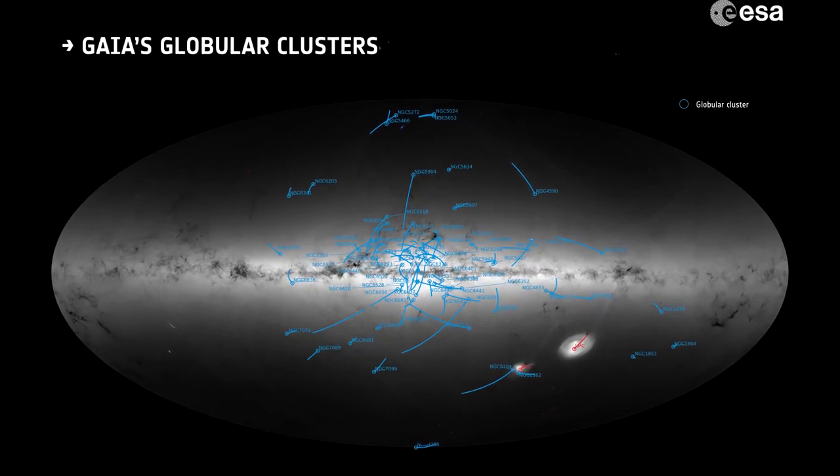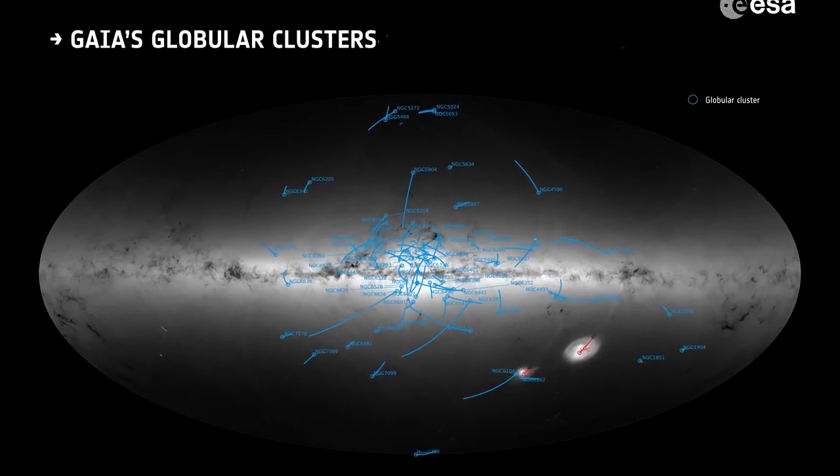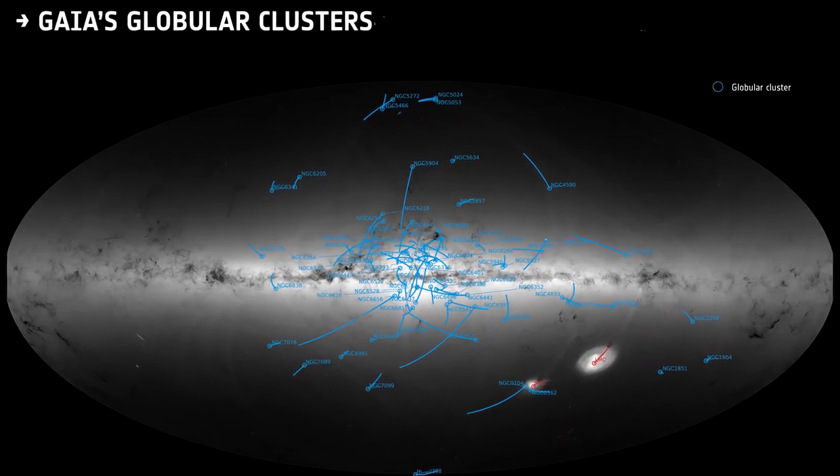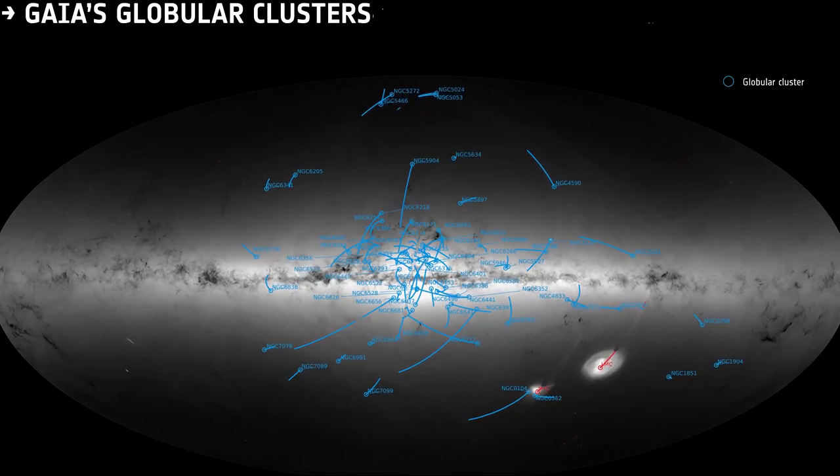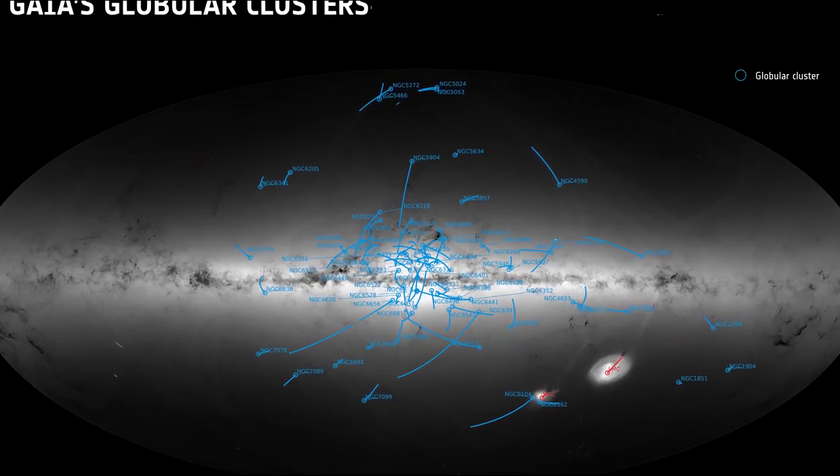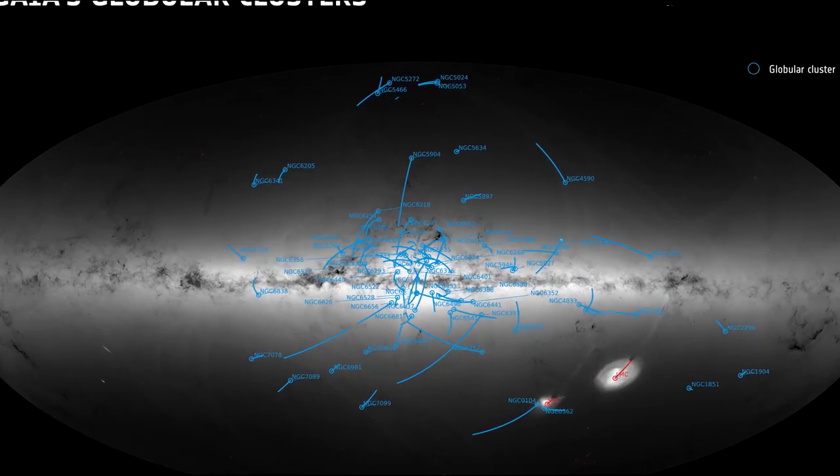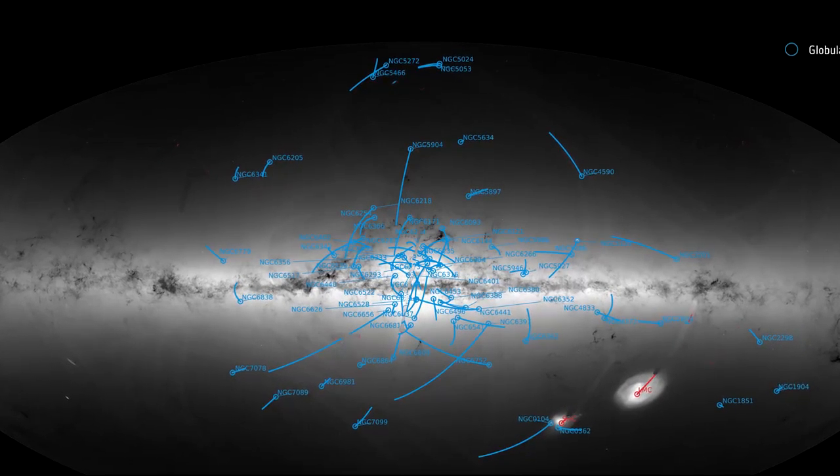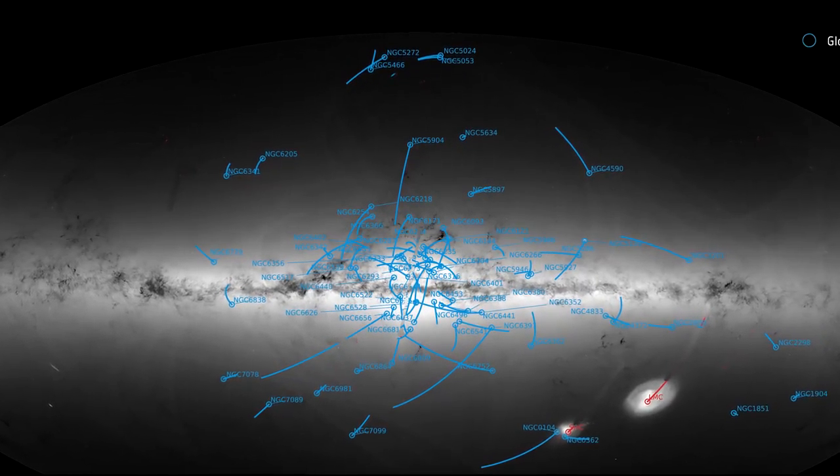In 2018, using both Hubble and Gaia data on globular cluster sizes and velocities, the mass of our galaxy was estimated to be at least 1.5 trillion times the mass of our Sun. This is more than previous estimates and indicates that the Milky Way is among the universe's larger galaxies.